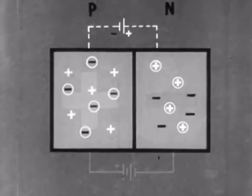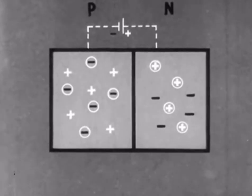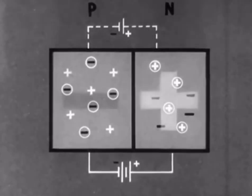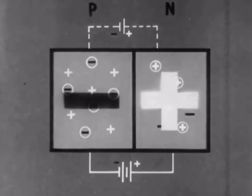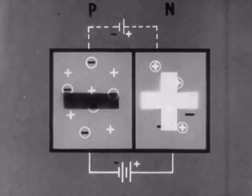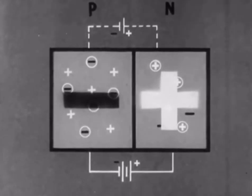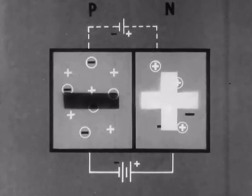Now watch what happens when we reverse the battery. That is, connect the real battery in the same direction as the imaginary battery. Positive carriers will again be repelled from the N-type germanium, and negative carriers from the P-type, so that no current flows.